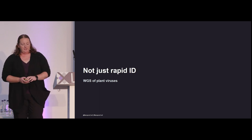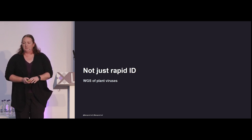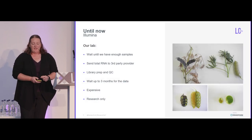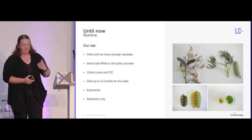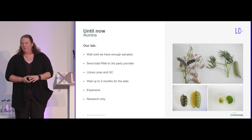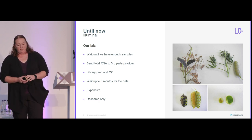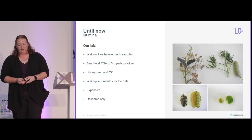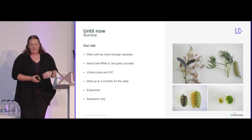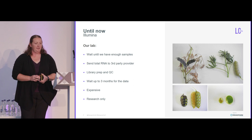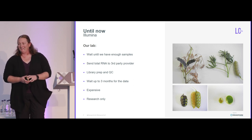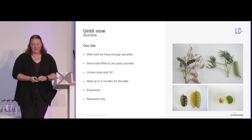The whole genome sequencing of plant viruses has been something of interest to me for a long time. What we used to have to do using Illumina sequencing was wait until we had enough samples to pool onto one lane of the sequencer. We'd send our total RNA to a third-party provider and they would do the library prep and the QC, and then we would wait — sometimes for months. That's expensive, not only in dollar value but in time as well, and it really only limited us to using it in a research capacity. When I did my PhD, I was looking at a disease in lupins called black pod syndrome. It took me 18 months to get that data and analyze it. If I'd had access to MinION then, I think I could have done a whole lot more and had that result a lot faster.